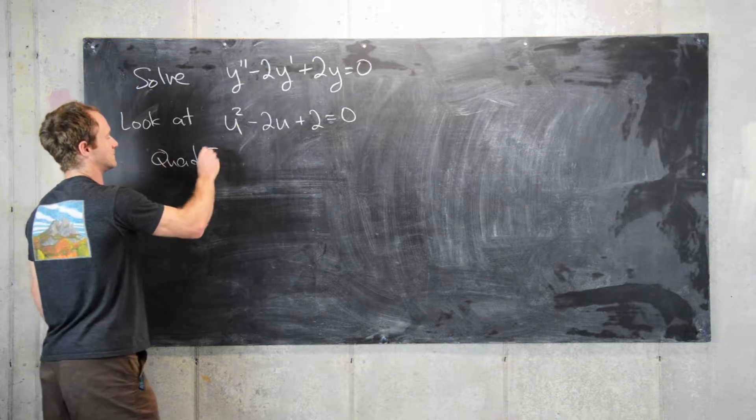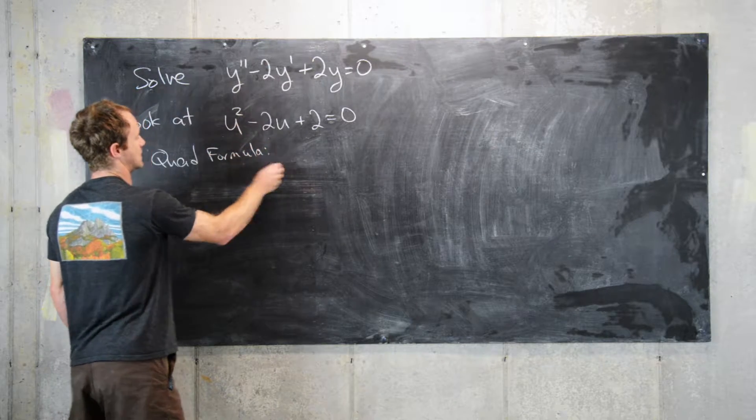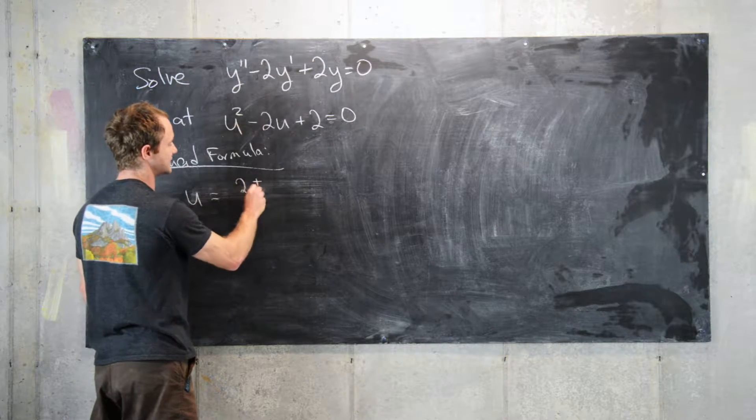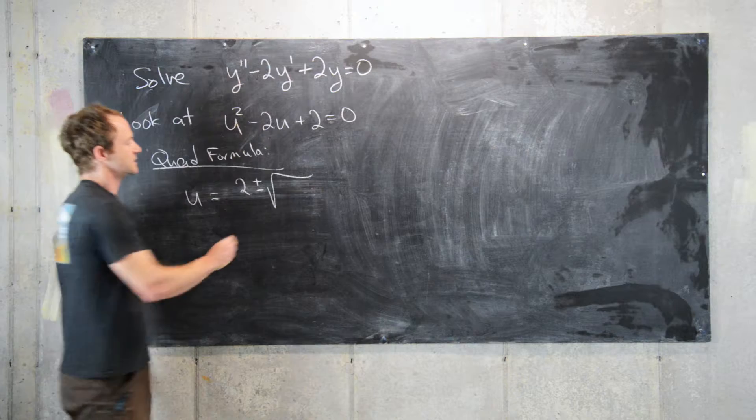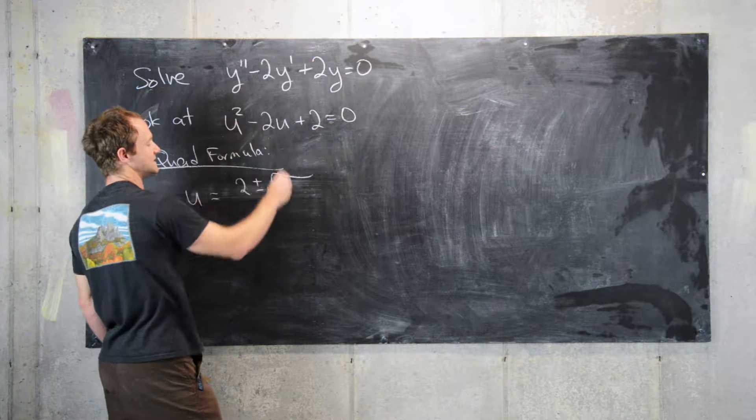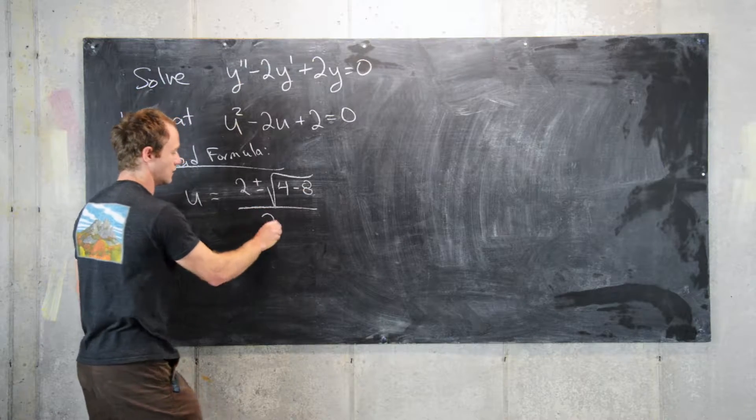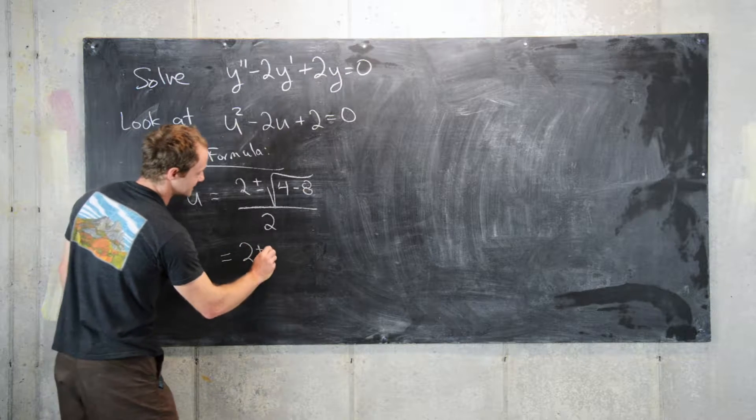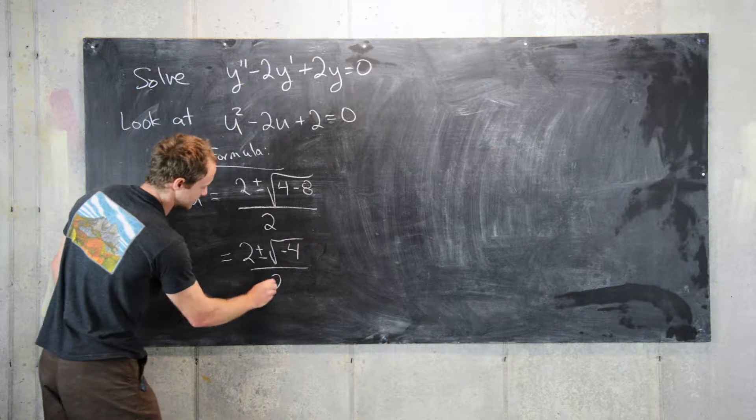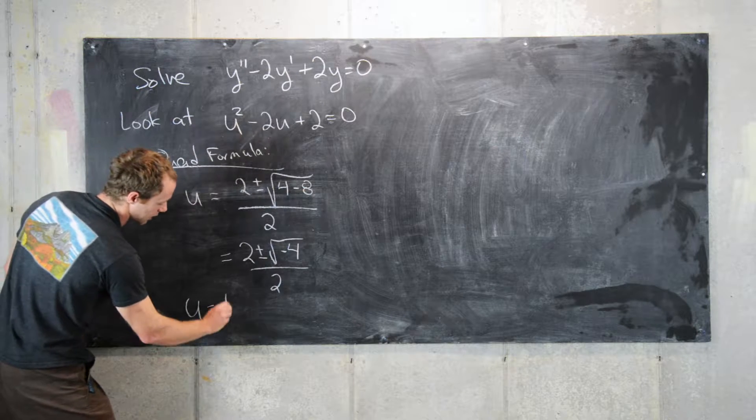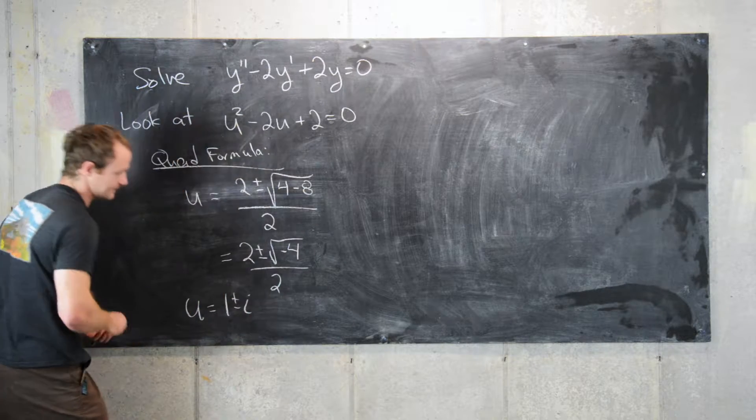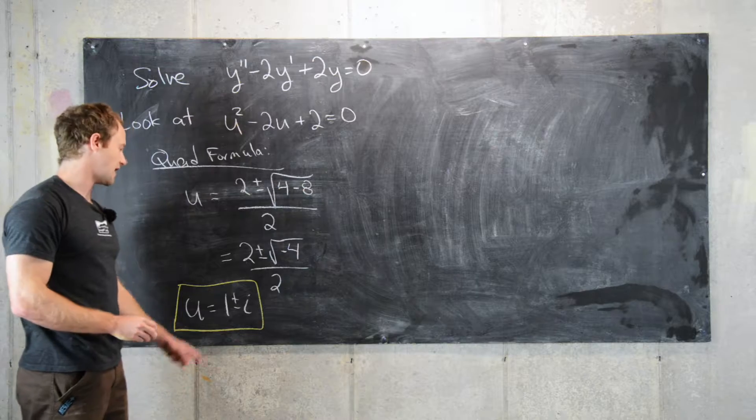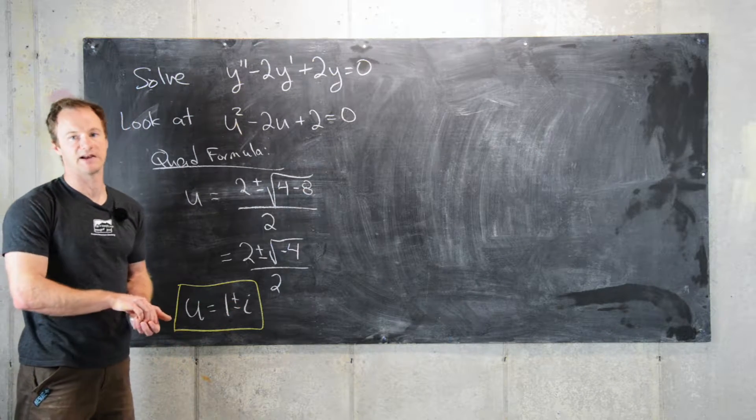so maybe we should use the quadratic formula. So using the quadratic formula, that'll give us u equals negative b, so that's 2, plus or minus the square root of b squared. So that'll be 4 minus 4 times a times c, so that's minus 8 all over 2. So now notice that's equal to 2 plus or minus the square root of negative 4 all over 2, so that means our roots are 1 plus or minus i. So here we can take the square root of negative 4 to be 2i, so we've got 1 plus i and 1 minus i.